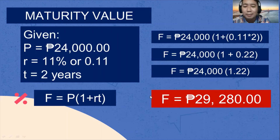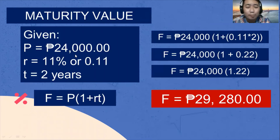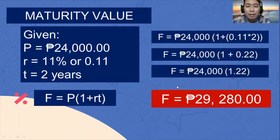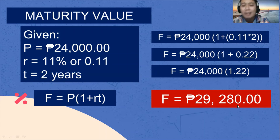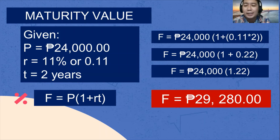That means 29,280.00 is the amount of money to be paid at the end of the term. From 24,000, it becomes 29,280.00 — meaning there is a 5,280.00 interest.